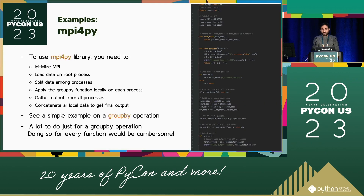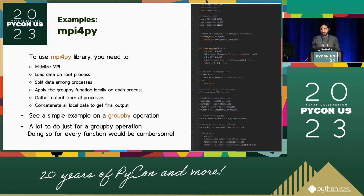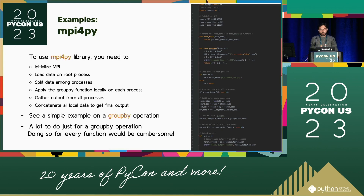If you want to use the MPI for Python library, you need to do a little bit more than that — about 59 lines of code — just to do a simple group-by .sum, which is one line in Pandas. You need to initialize MPI, load data on the root process, scatter data among processes, apply the group-by function locally on each process, gather the output from all processes, and concatenate all local data to get the final output. It's a lot just for a group-by operation.